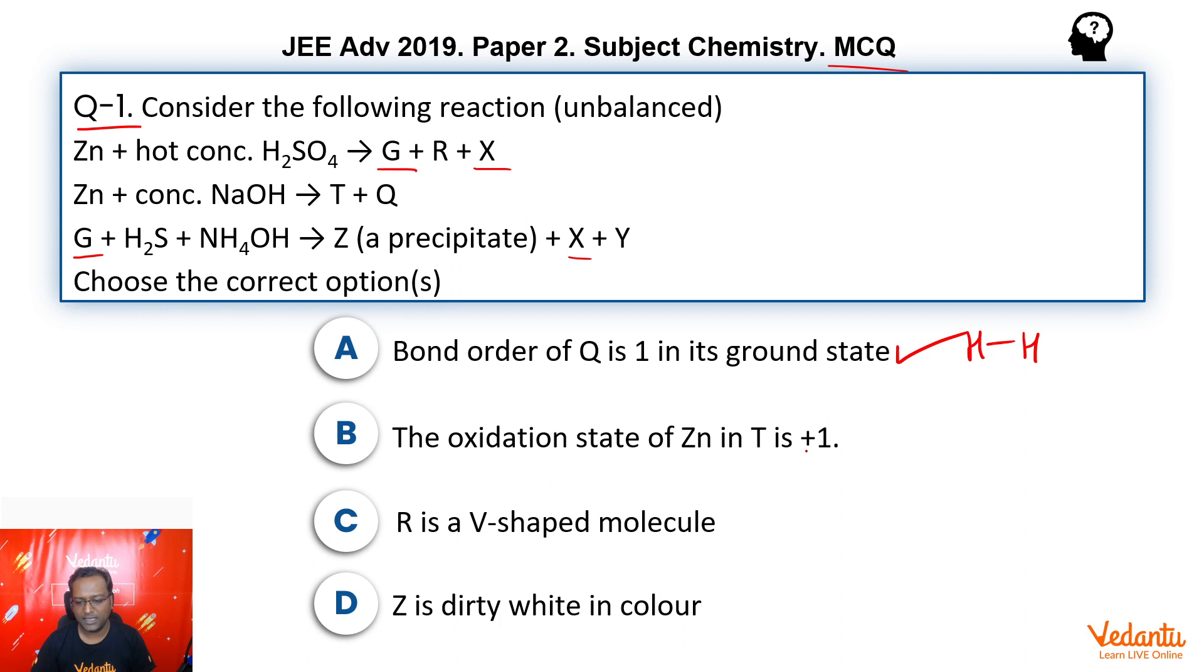Oxidation state of zinc in T is +1. So what was T? T was Na2ZnO2. And in this, zinc is in +2 oxidation state, not +1. So this is wrong.